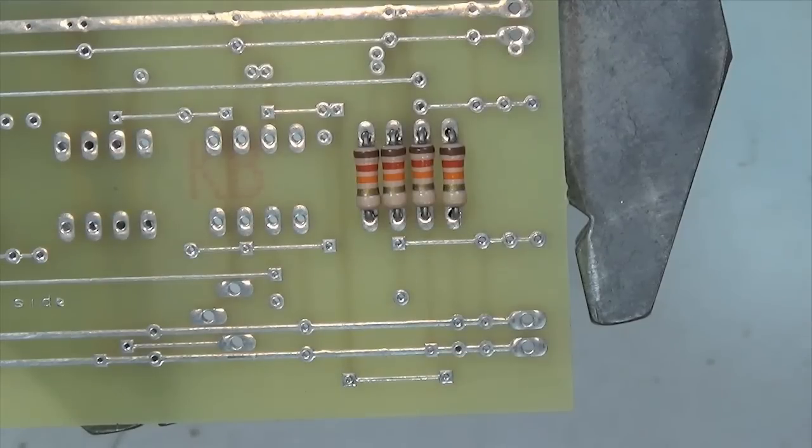So now I have all the resistors in the circuit board, and all the color codes are oriented in the same direction. Any further parts that I put on, like resistors, that I will populate onto the circuit board, I will match this orientation. Just for neatness.